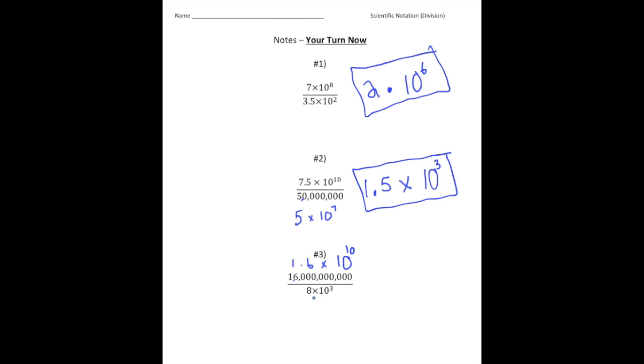Now, 1.6 divided by 8, that gives us 2 10ths times. 10 to the 10th divided by 10 to the 3rd, excuse me, gives us 10 to the 7th power.